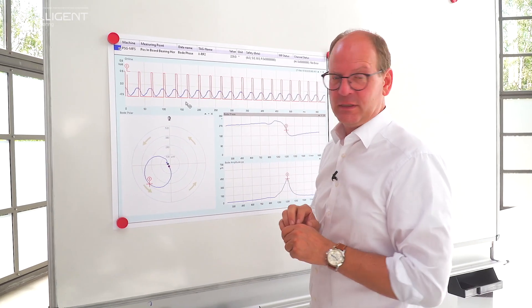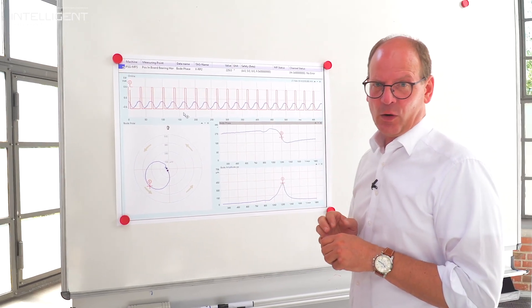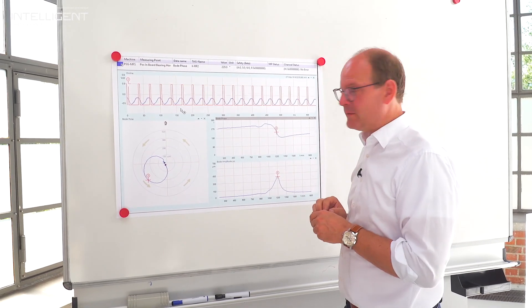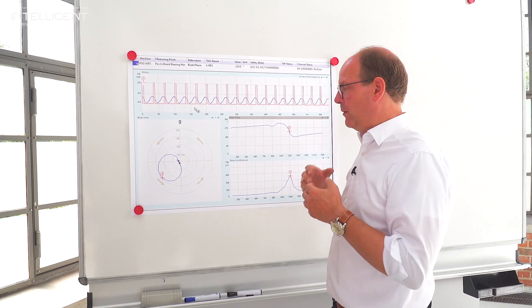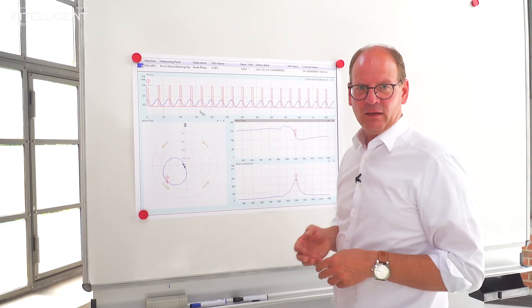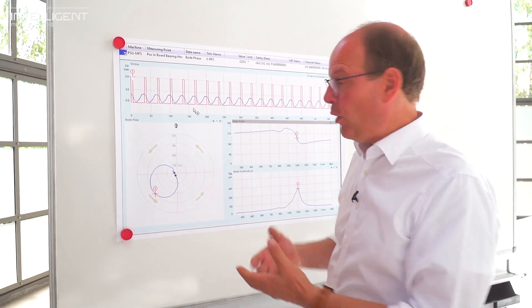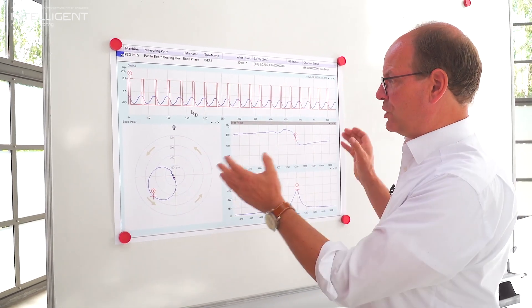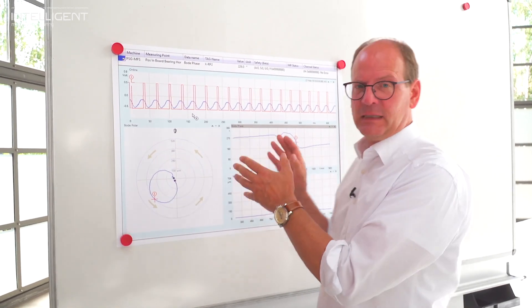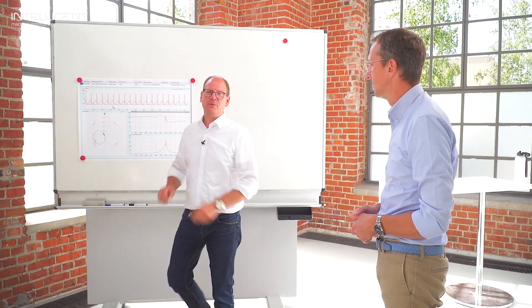This Bode Polar Plot is a very important tool you use during the run-up and coast-down of a rotating machine. This can also be used to detect oil instability, unbalance, misalignment, any kind of failure or problem with the gear coupling or in the gearbox. Any kind of failure we would like to detect during the start up or during the run-up and coast-down of the machine.